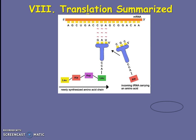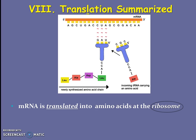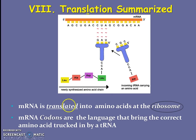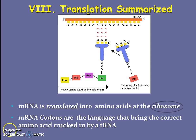In our translation step, we're taking the language of nucleic acids in our messenger RNA and translating it to the language of proteins — amino acids. This happens at the reading station, the ribosome, which is the site of protein synthesis. We do this because mRNA has a code of three-letter codons, which is the language to bring the correct amino acid trucked in by a tRNA. It's quite complicated and we're going to practice in class.